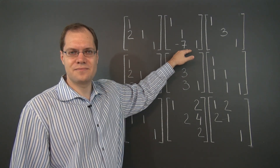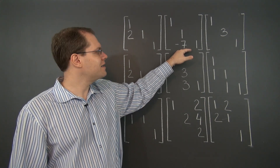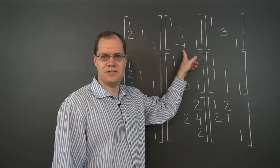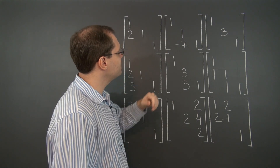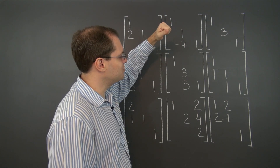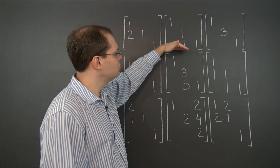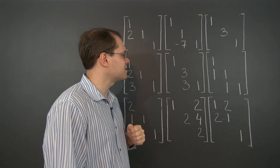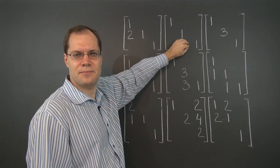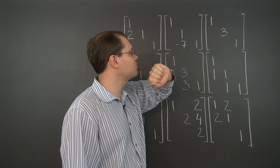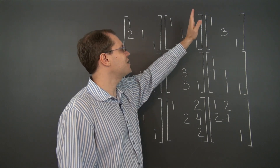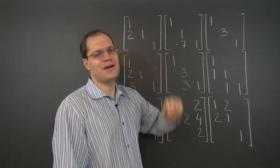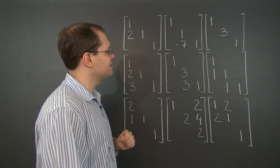Here's another one like that. Start mentally with the identity and then answer: what do you need to do, first in terms of rows, then in terms of columns, to get this matrix? From the row perspective: subtract seven of row two from row three. Now from the columns perspective, starting with the identity matrix, the operation is: subtract seven of column three from column two. And we're done analyzing this matrix.